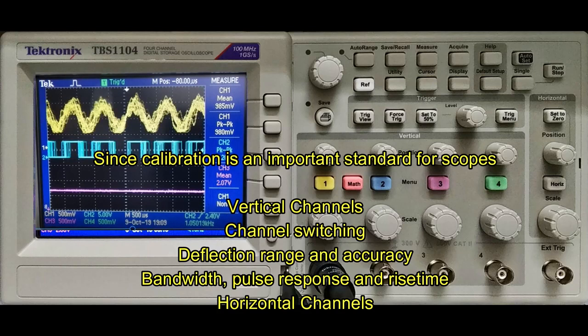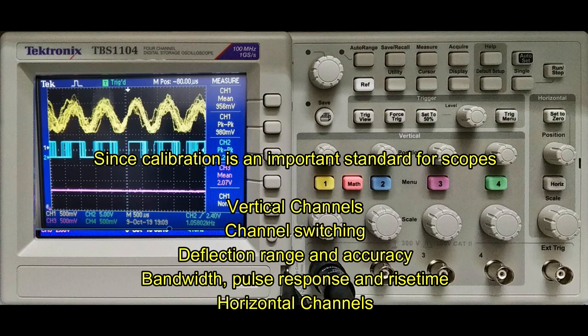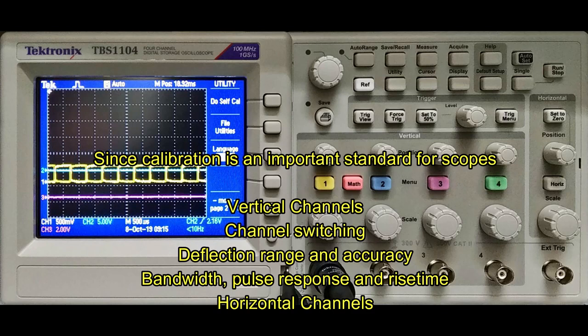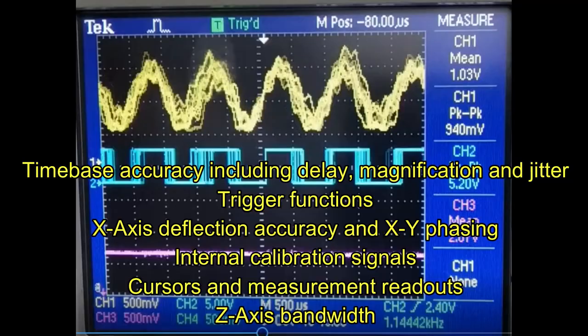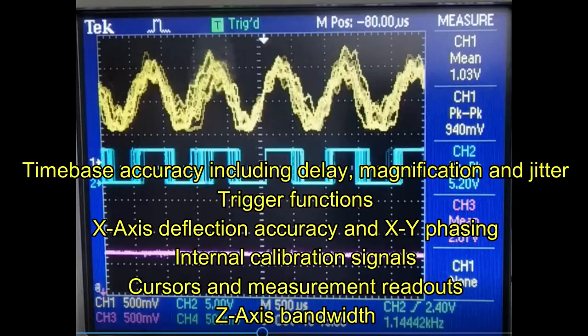Since calibration is an important standard for scopes: vertical channels, channel switching, deflection range and accuracy, bandwidth, pulse response and rise time, horizontal channels, time base accuracy including delay magnification and jitter, trigger functions, x-axis deflection accuracy and XY phasing, internal calibration signals, cursors and measurement readouts, and set axis bandwidth.